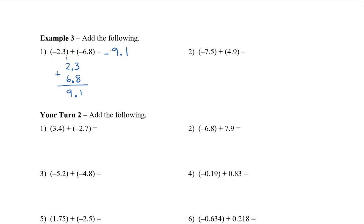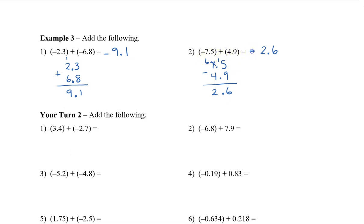In question number two, we have negative 7.5 plus 4.9. These two numbers have opposite signs, so when the numbers have opposite signs, we're going to subtract. Always take the bigger number and subtract the smaller number, ignoring all the signs. So we borrow — this becomes 6 and this is 15. 15 minus 9 is 6, bring down our decimal, and 6 minus 4 is 2, so we have 2.6. Now we see that we have negative 7.5 and positive 4.9, so we have more negatives than positives. Therefore, my answer will be negative 2.6.